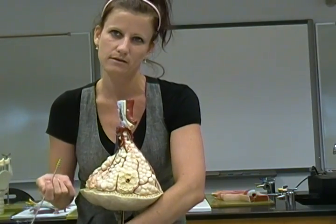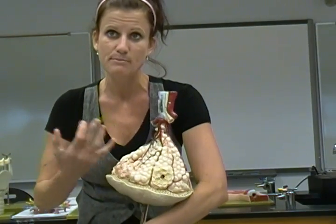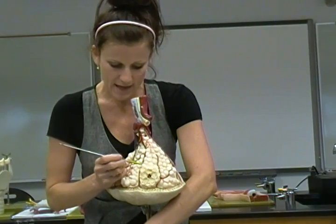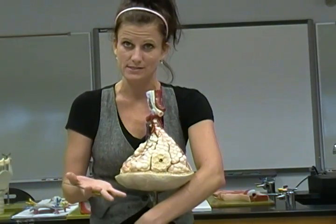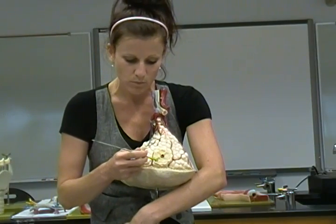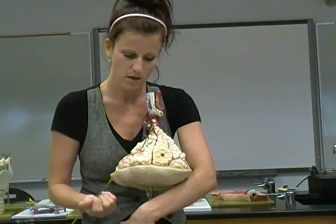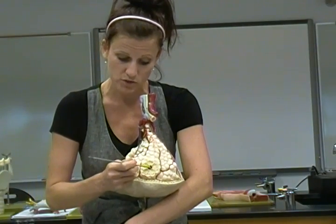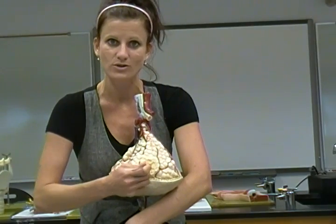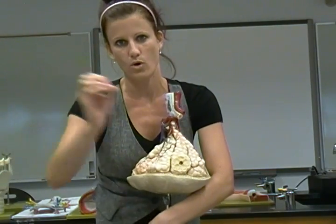The alveolar duct acts like a hallway, and air flows from there into a cluster of alveoli called an alveolar sac — this grape-like cluster you see here. The alveolar sac contains many individual alveoli; each little bubble represents one alveolus. Each alveolus is a thin-walled chamber where gas exchange occurs, with the alveolar duct like a hallway and each alveolus like a room off of it.